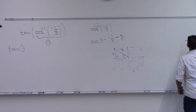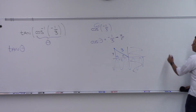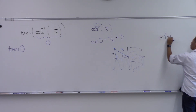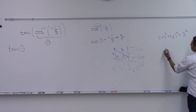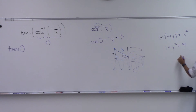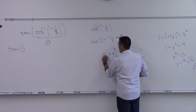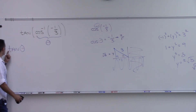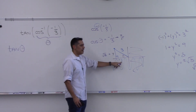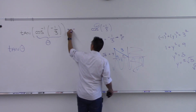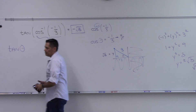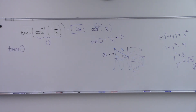Using the Pythagorean theorem: (–1)² + Y² = 3², giving 1 + Y² = 9, so Y² = 8, meaning Y = ±√8. We're in the second quadrant so Y is positive: √8. Tangent of that angle is Y over X: √8 over negative 1, which is negative √8.